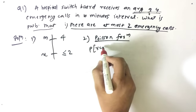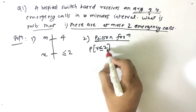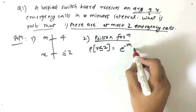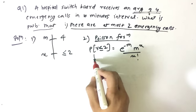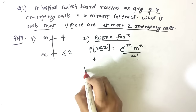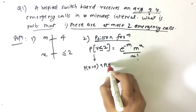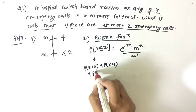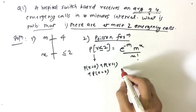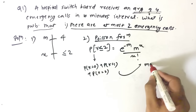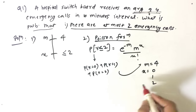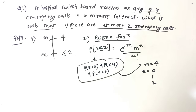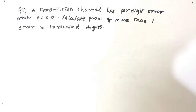Applying the Poisson formula: P(x ≤ 2) = e raised to minus m, times m raised to x, upon x factorial. This can be expanded as P(x=0) + P(x=1) + P(x=2). m remains 4 throughout, while x changes to 0, 1, and 2 respectively. Plug in the values and add all results to get the final answer.